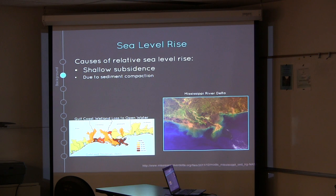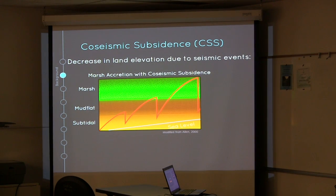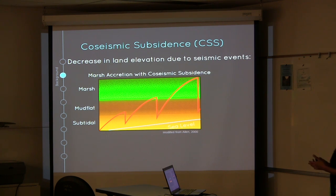There are some causes of relative sea level rise. There is shallow subsidence, which we see in the Gulf Coast and the Mississippi River Delta due to sediment compaction. We also have co-seismic subsidence, which we see in the Pacific Northwest due to the Cascadia subduction zone, caused by deep-seated tectonic movement. Co-seismic subsidence is a decrease in land elevation due to a seismic event — we are dropping in elevation at the same time a seismic event is occurring. This changes the stratigraphy compared to normal marsh succession.